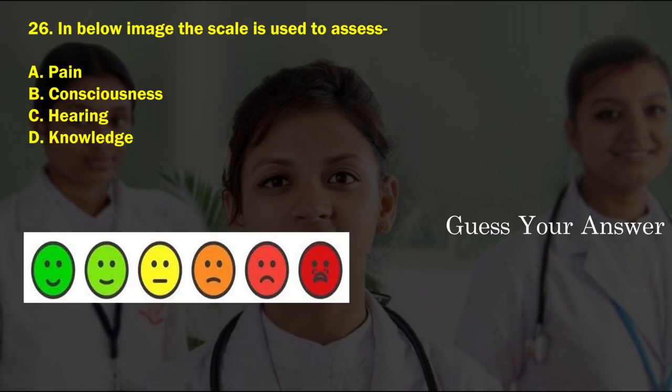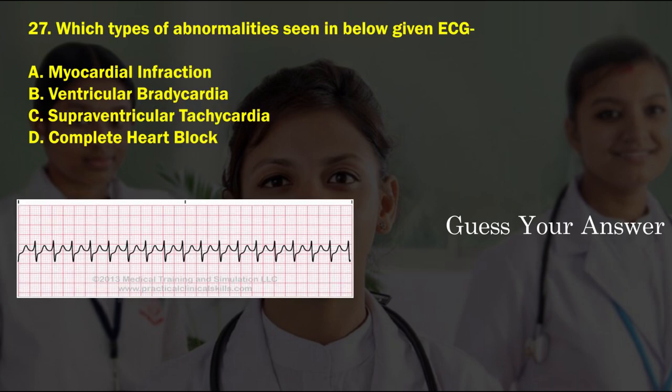In the below image, the scale is used to assess — option A: pain, option B: consciousness, option C: hearing, option D: knowledge. The correct answer is option A, pain.